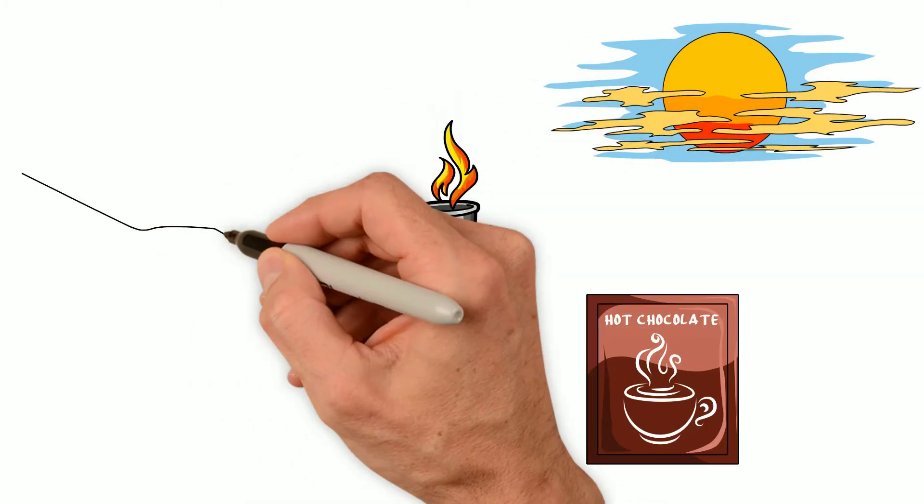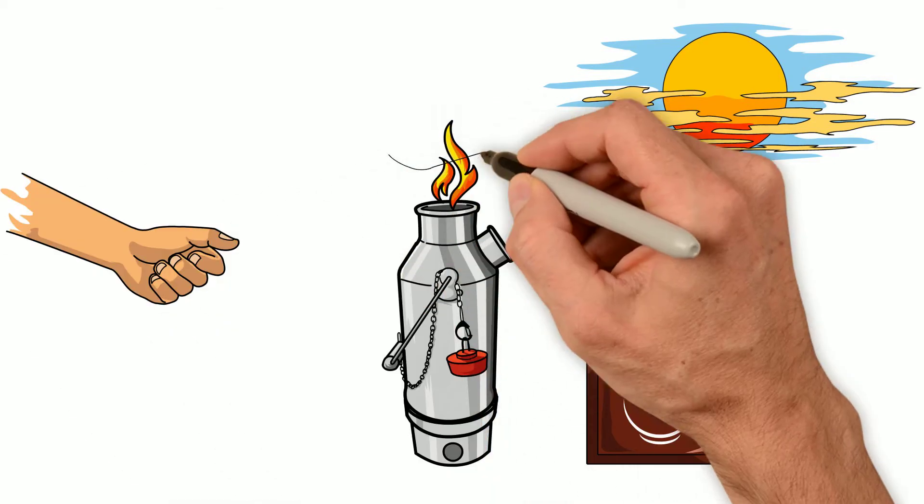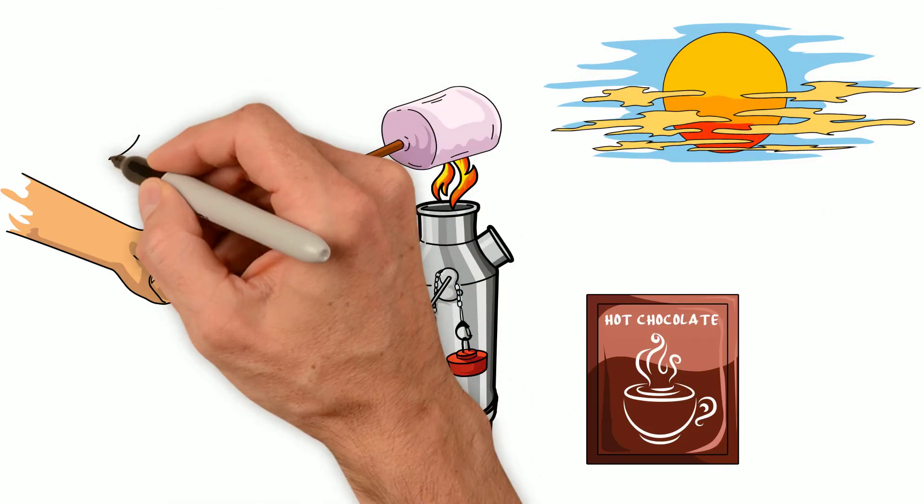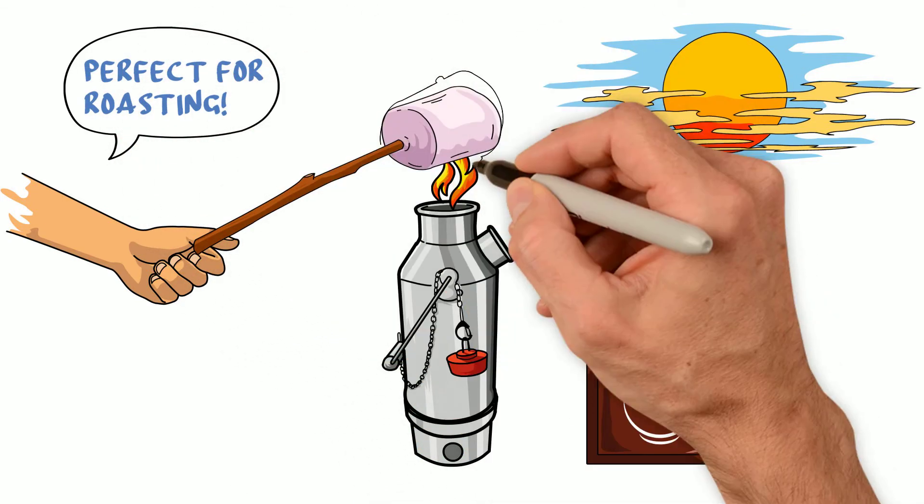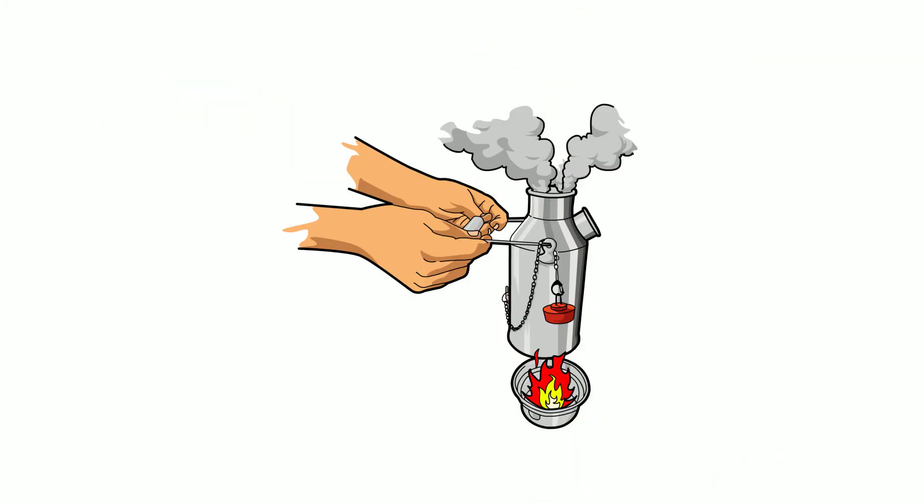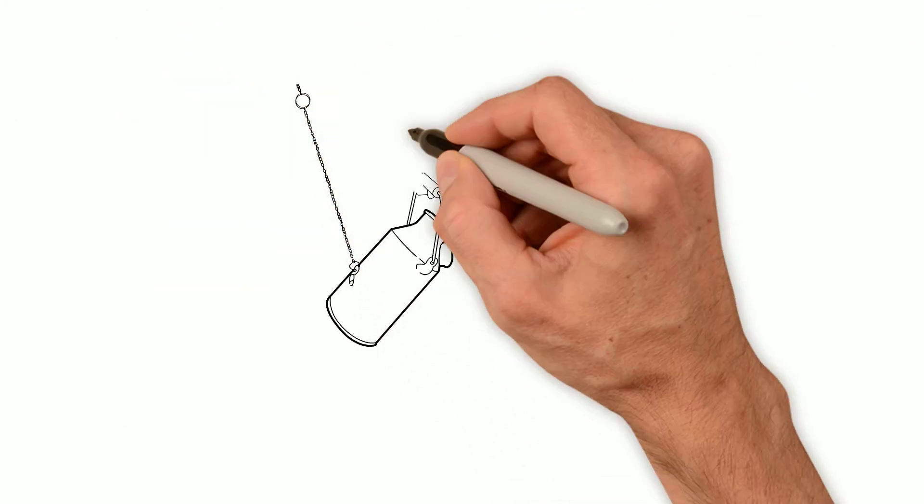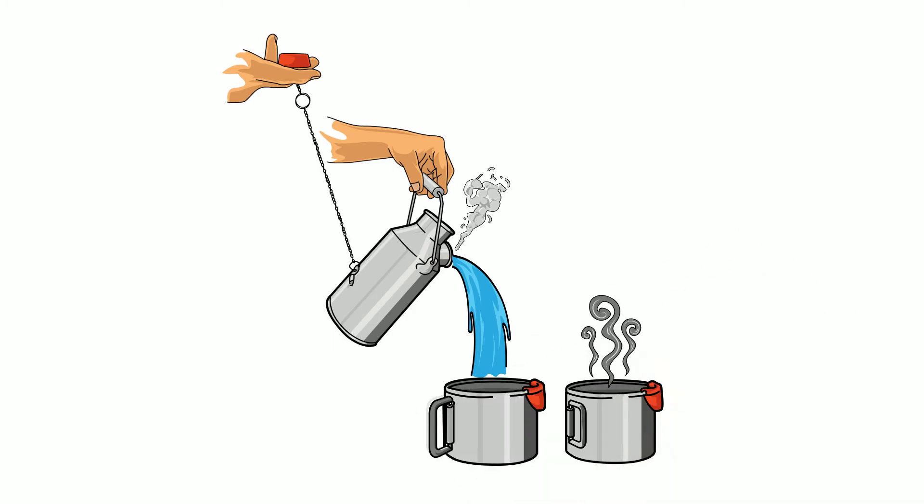Time for dessert, he said, as he placed a marshmallow on the end of the stick and held it over the top of the chimney. The flame and heat coming out the top of the kettle were perfect to quickly cook the marshmallow golden brown. He removed the kettle once again and poured hot water into the stainless steel cups to make hot chocolate.